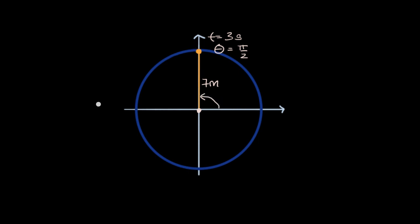And let's say that at t is equal to six seconds, theta is equal to pi radians. And so after three seconds, the ball is now right over here.